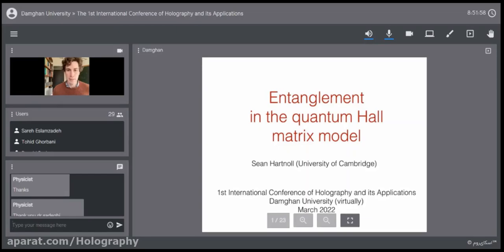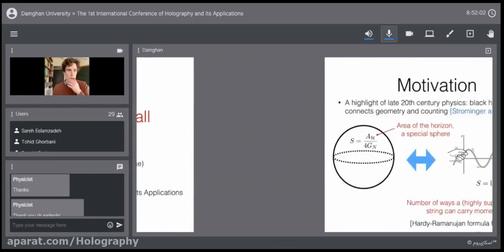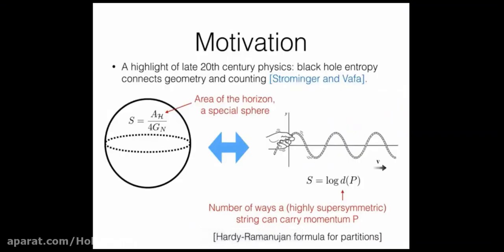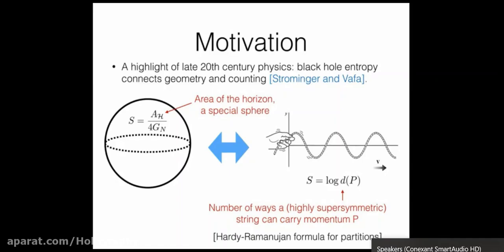I'm going to talk about entanglement in the quantum Hall matrix model. Let me spend a few minutes motivating what I'm going to talk about. Let's go back a few years and remember a highlight of theoretical physics in the late 20th century: Strominger and Vafa's matching of the black hole entropy with a microscopic problem.